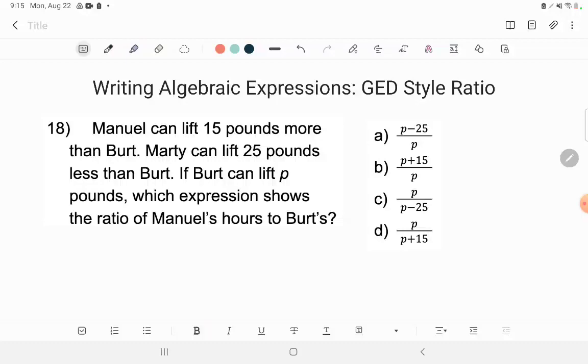But here's the tricky part. We don't know about Burt. Look at what it says. If Burt can lift P pounds, that's what makes this an algebraic expression. We have an unknown number.